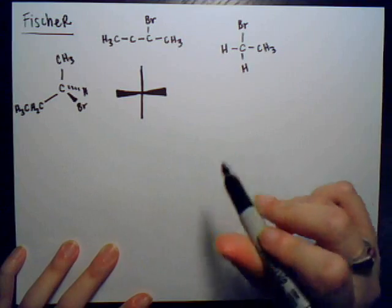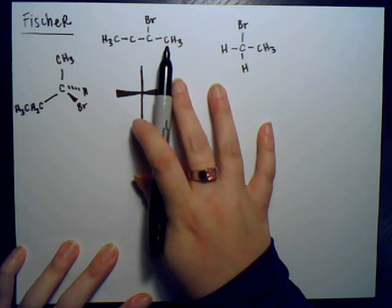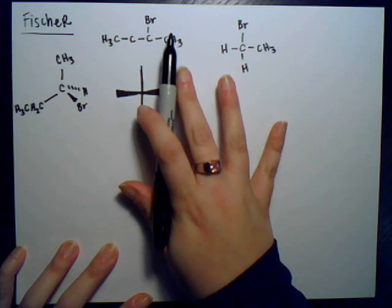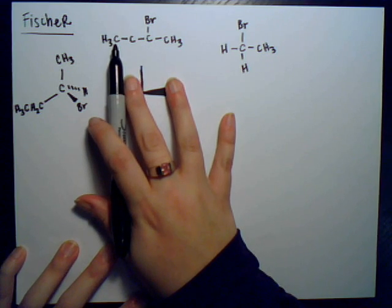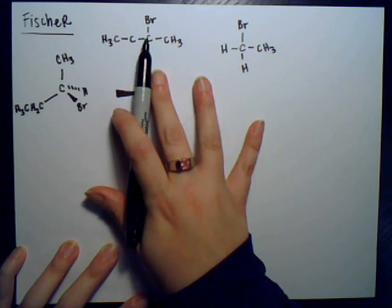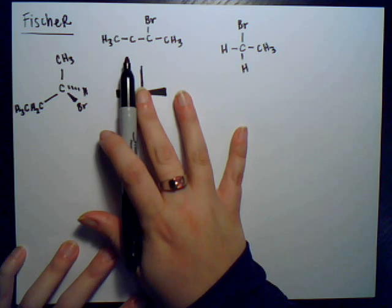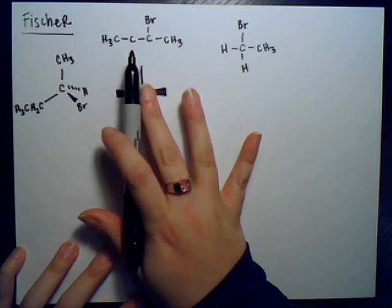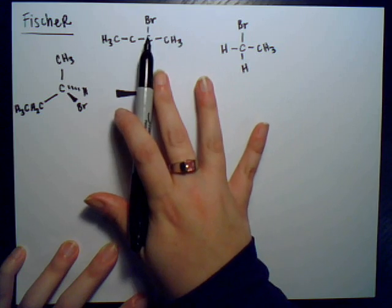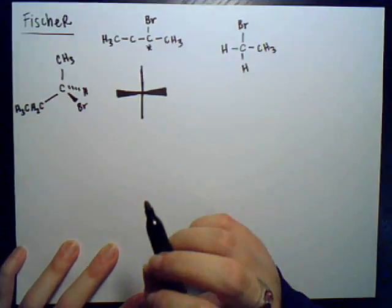Since two of the substituents are the same, it's not a chiral center. Looking at this molecule: this carbon is attached to three hydrogens, so not a chiral center. This carbon is attached to CH3, a carbon with bromine, and two hydrogens not drawn in — again, not a chiral center. However, this carbon is attached to CH2CH3, CH3, bromine, and a hydrogen not drawn in — all four are different, so this is a chiral center, usually marked with a star.